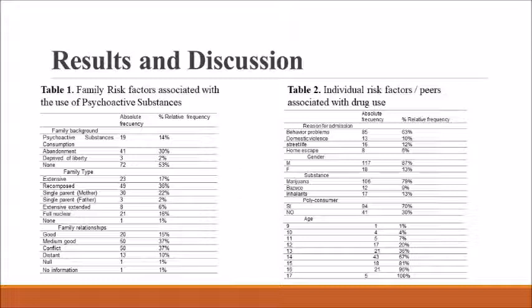In the second table, results place behavioral problems at 63% as the first reason associated with consumption, in accordance with Namizela, who related consumption with acts of violation of norms. Additionally, there is an increase in consumption between the ages of 13 and 14 associated with the male gender at 87%. Finally, marijuana at 79% was evidenced as the main substance of consumption. As Rios explains, the early use of cannabis is also associated with crime.